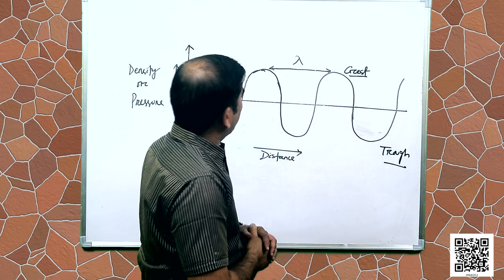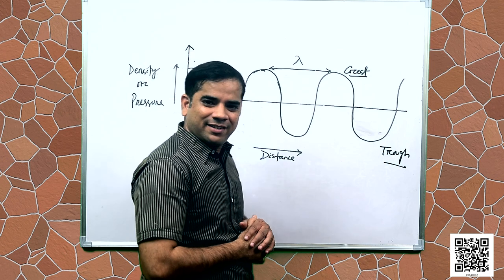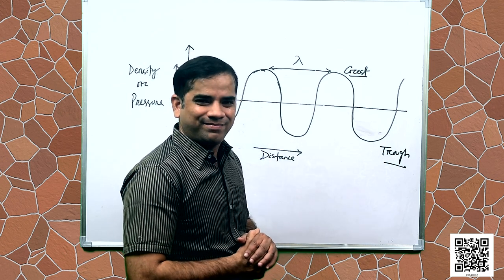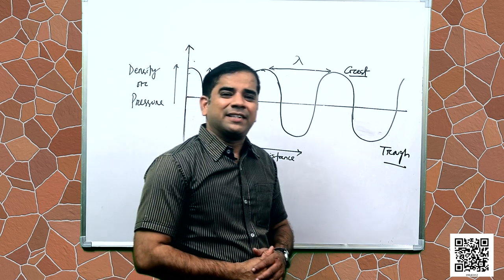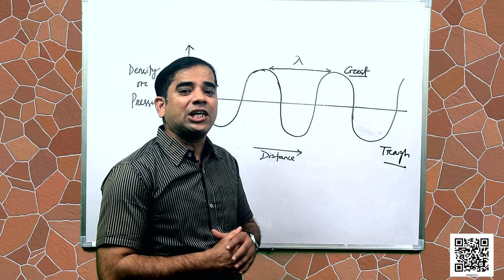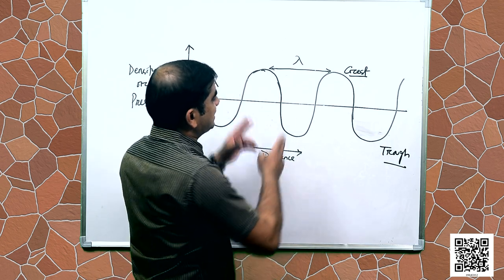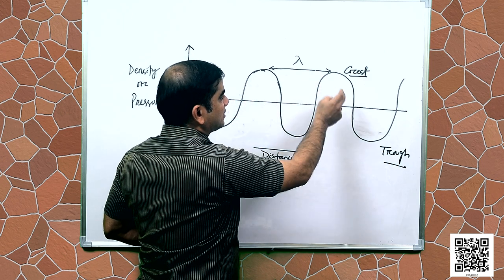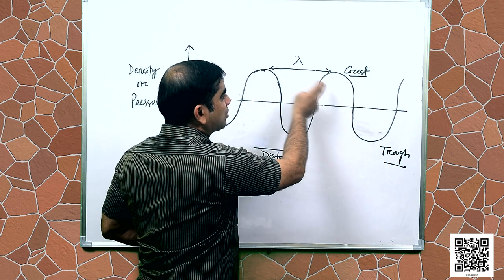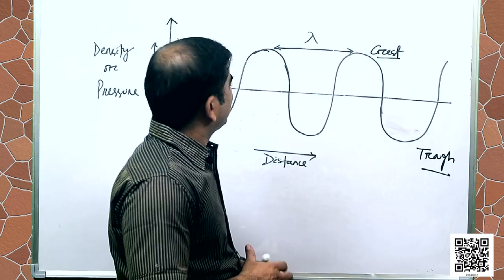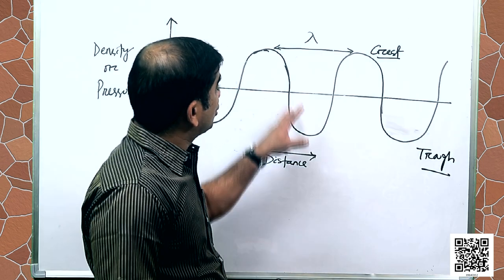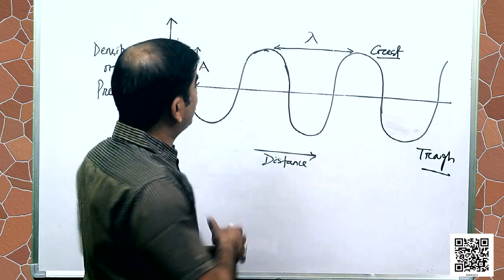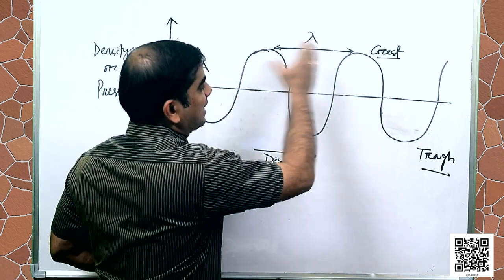The peak is called the crest and the valley is called the trough. The distance between two consecutive compressions — for example, compression x and compression y — or the distance between two consecutive rarefractions such as rarefraction m and rarefraction n, are two consecutive compressions and two consecutive rarefractions respectively.